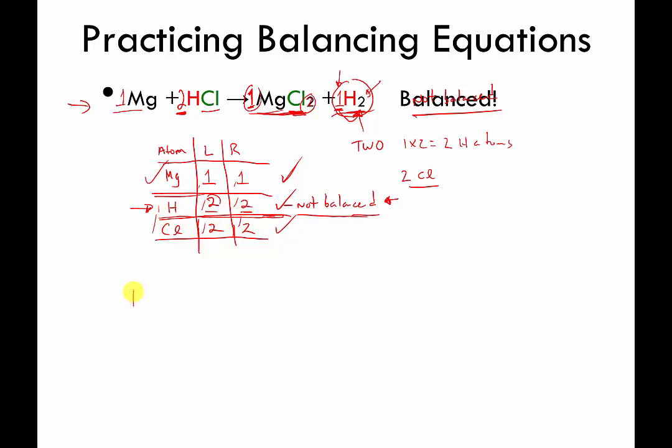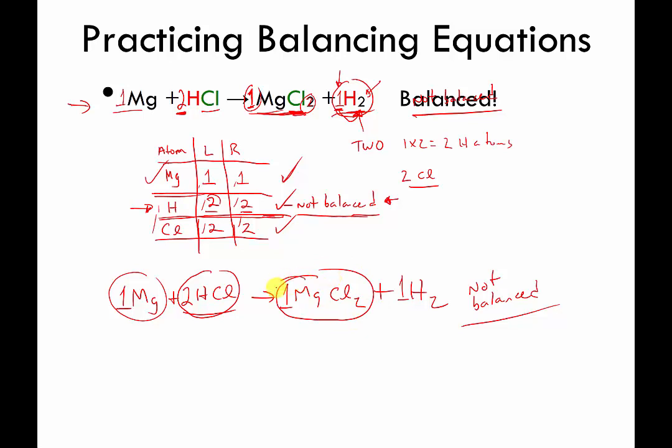So the way this equation was written originally, Mg plus HCl makes MgCl2 plus H2, not balanced, or think of it as being a slightly incorrect recipe. And what we did is we said, yeah, there should be a one here, and there was. However, there should be a two in front of the HCl. And the other ones that were implied to be there in front of the other formulas, they get to stay. So the correct formula is one magnesium needs to be mixed with two HCls, and that will make one MgCl2 and one H2 molecule as well.